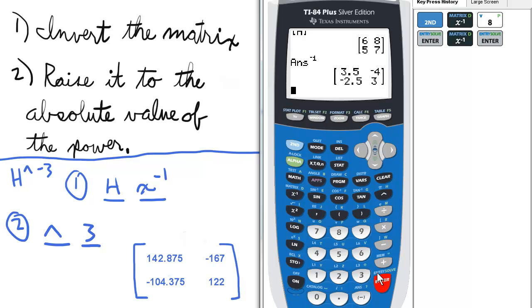The second part, we raise it to the absolute value of the power. So in this case, if we want to raise H to the negative third, we inverted it, and now we raise it to the positive third.